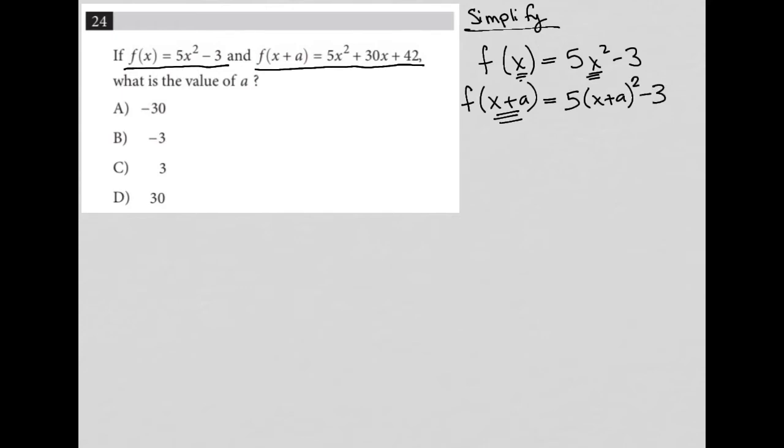That is something I can simplify. That's 5(x+a)(x+a) - 3. I can FOIL the product of the binomials by doing x times x. First, I have a 5 out there. x times x is x², x times a is ax, plus another a times x is also ax, so I have 2ax. And then a times a is a².